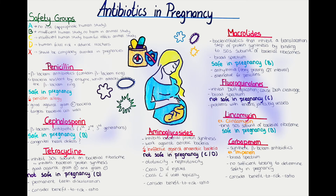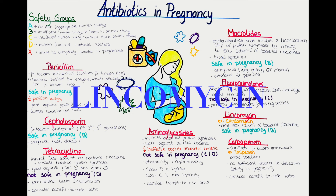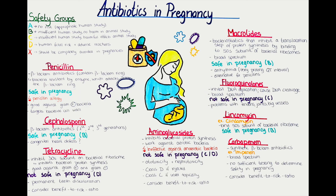Next we will talk about the lincomycin antibiotic class. Lincomycins work similarly to macrolides, so they also bind to the 50S subunit of bacterial ribosomes. Clindamycin is a good example of a lincomycin antibiotic. It is generally considered safe in pregnancy and is given pregnancy category B. So remember, clindamycin is a safe option and it is a type of lincomycin.